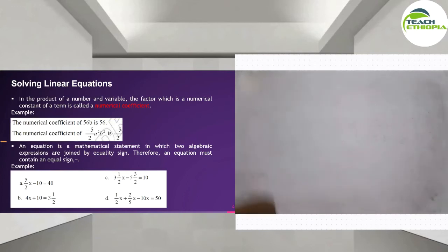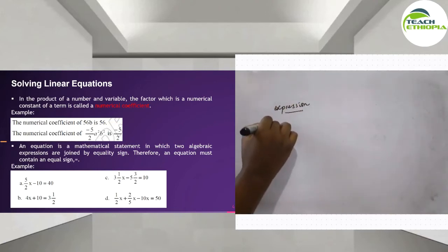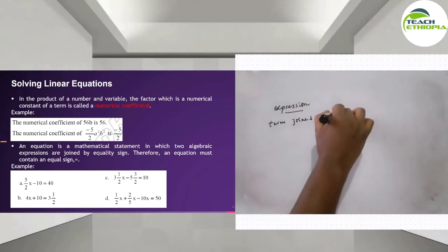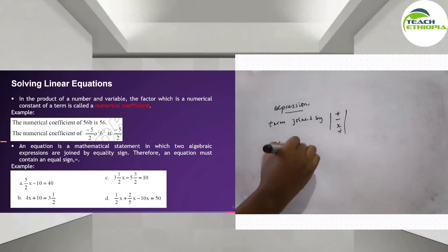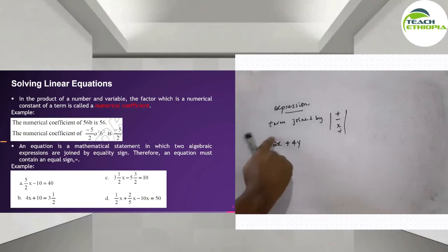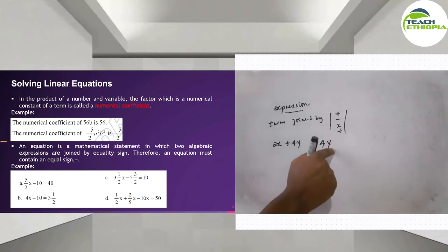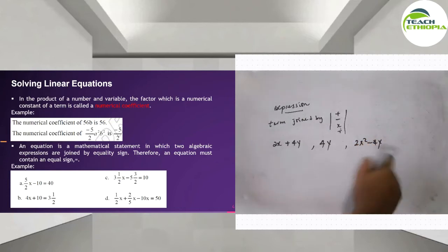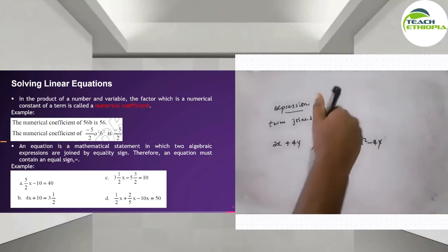Expressions — an algebraic expression is formed when terms are joined by plus, minus, or multiplication. For example, 2x plus 4y is an expression. Also, 4y minus something — terms joined by subtraction — is an expression. Similarly, 2x squared minus 4y is an expression, because those terms are joined by plus or minus operators.